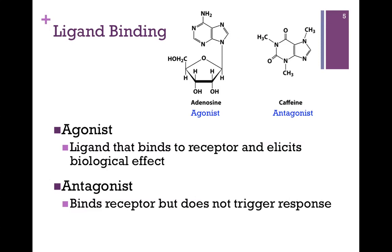With regards to ligand binding, the actual substance that elicits the biological effect is called the agonist. The antagonist can bind to the receptor but doesn't trigger the response, and it blocks the binding of the true agonist. Here's an example of one of my favorite agonist-antagonist pairs: adenosine binds its receptor and the effect is we get very sleepy. The antagonist is caffeine — although the structure is different, that dual ring structure closely resembles the adenosine base, so it binds to the receptor and we don't get sleepy. This is how caffeine works.